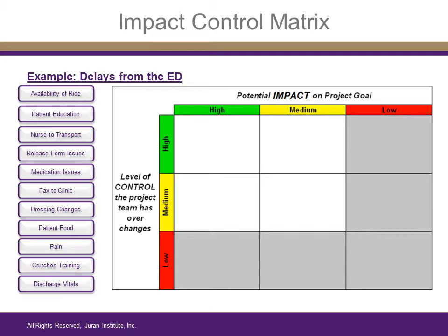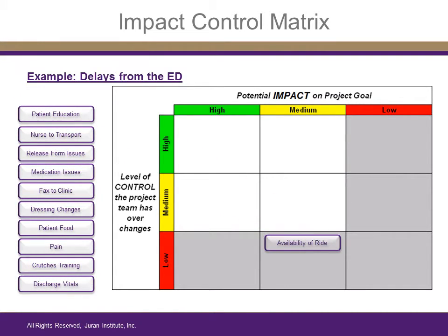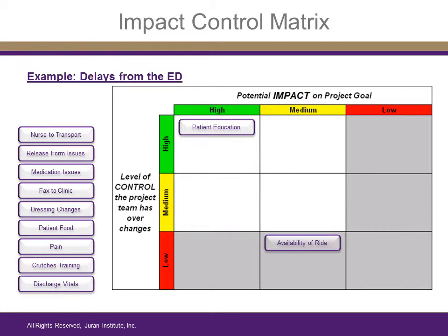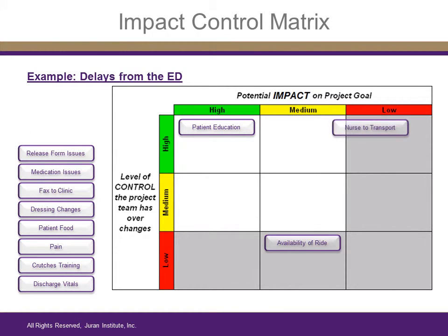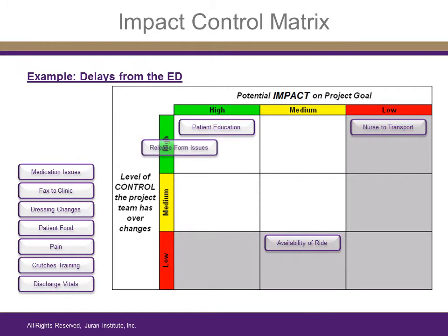Here are their findings. Availability of ride: medium impact, low control. Patient education: high impact, high control. Nurse to transport: low impact, high control.